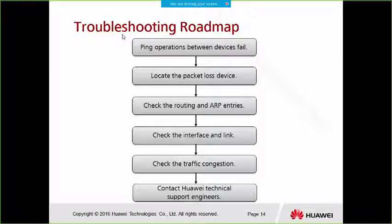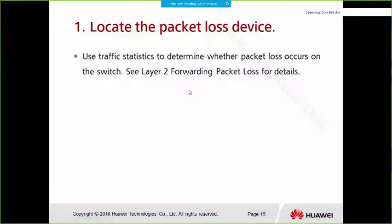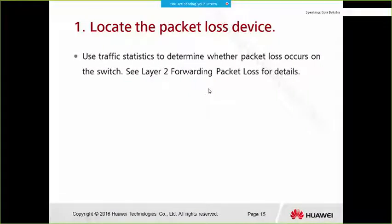For Layer 3 unicast forwarding packet loss, first perform a ping operation between devices to detect the failure, then locate the packet loss device using the same approach as Layer 2 — using ACL to configure a policy and check statistics for dropped packets. Then check routing and ARP entries, interface and link, and traffic congestion.